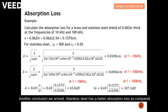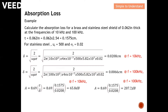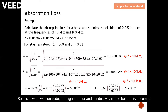We conclude that stainless steel has a better absorption loss compared to brass. At 100 kHz, brass achieves only about 33.7 dB, while stainless steel achieves 207.3 dB. The higher the μᵣ and conductivity, the better the material is at combating electromagnetic wave penetration through the shield.